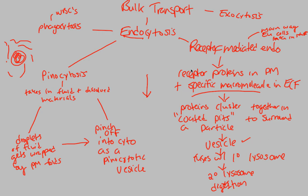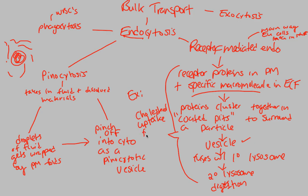A classic example of receptor-mediated endocytosis is cholesterol uptake — cholesterol being brought into cells from the blood. Cells need cholesterol; it's absolutely crucial for maintaining the fluidity of the cell membrane. Cholesterol is the specific macromolecule that receptor proteins recognize; they surround it, coat it, create a vesicle, and fuse it with a lysosome so it can be digested and used on the cell membrane for fluidity.